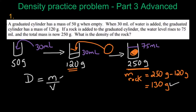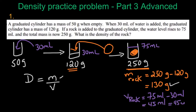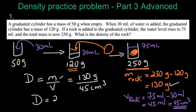Now how can we find the volume of the rock? The volume can be found from the water level. The water level rose to 75 milliliters and it was 30 milliliters before, so 75 minus 30 milliliters gives 45 milliliters, which is the same as 45 centimeters cubed since we're talking about a solid. Applying those numbers: D = 130 g ÷ 45 cm³ = 2.9 grams per centimeter cubed.